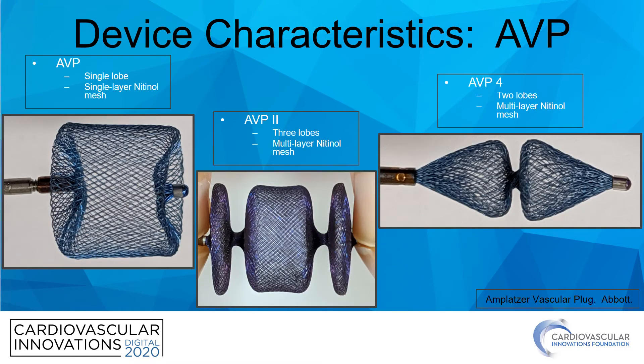There are two major plug platforms available in the US for vessel embolization. The first is the Amplatzer vascular plug family. There are four AVPs offered but only three are currently available in the US. The original AVP is a single-lobe device. The AVP-2 is a tri-lobe device made up of three bodies of equal diameter with a wider middle lobe. The AVP-4 is the most recent iteration and is made up of two lobes.